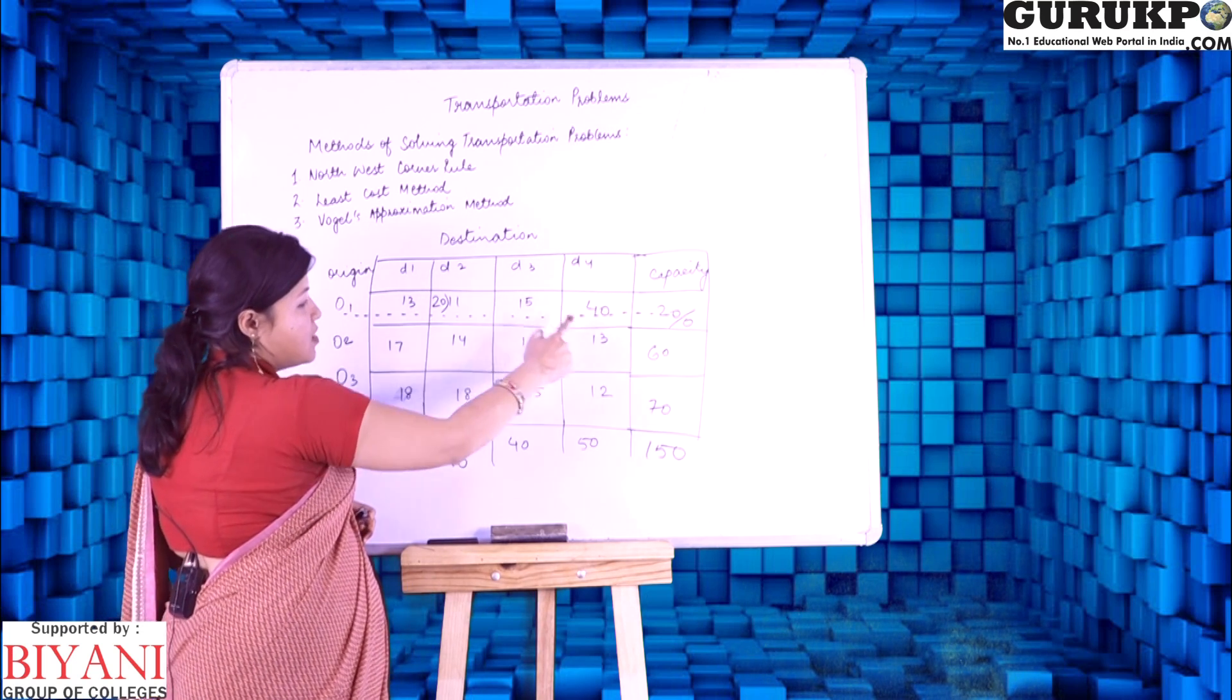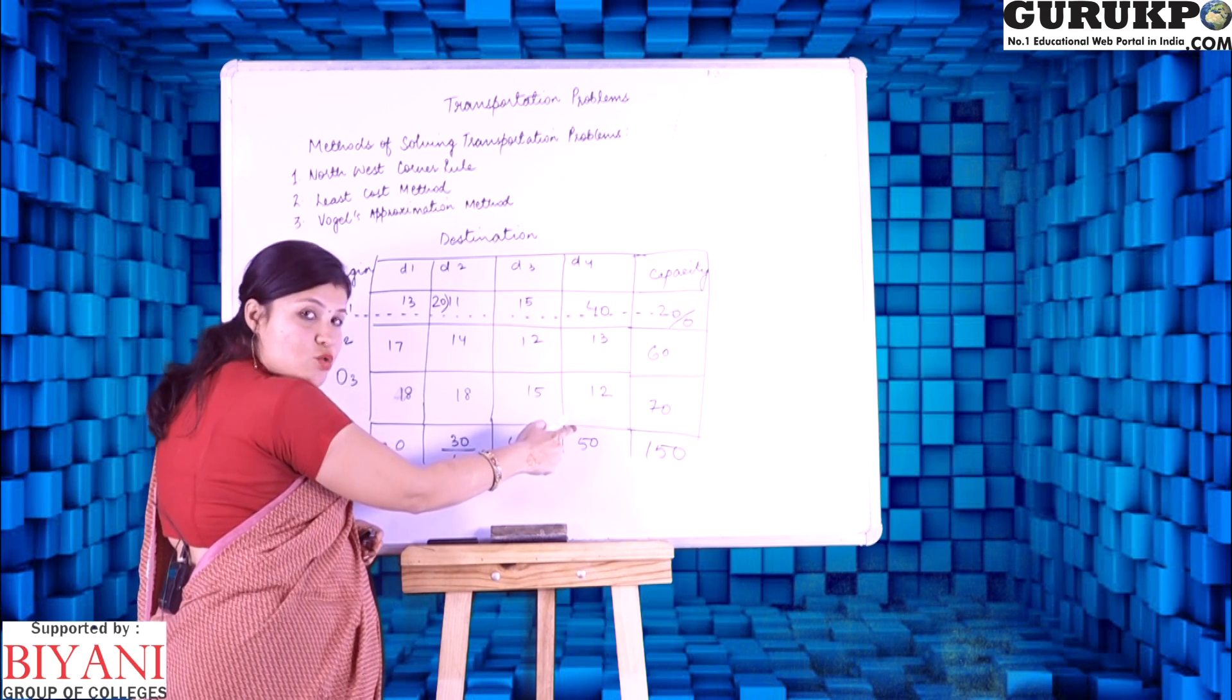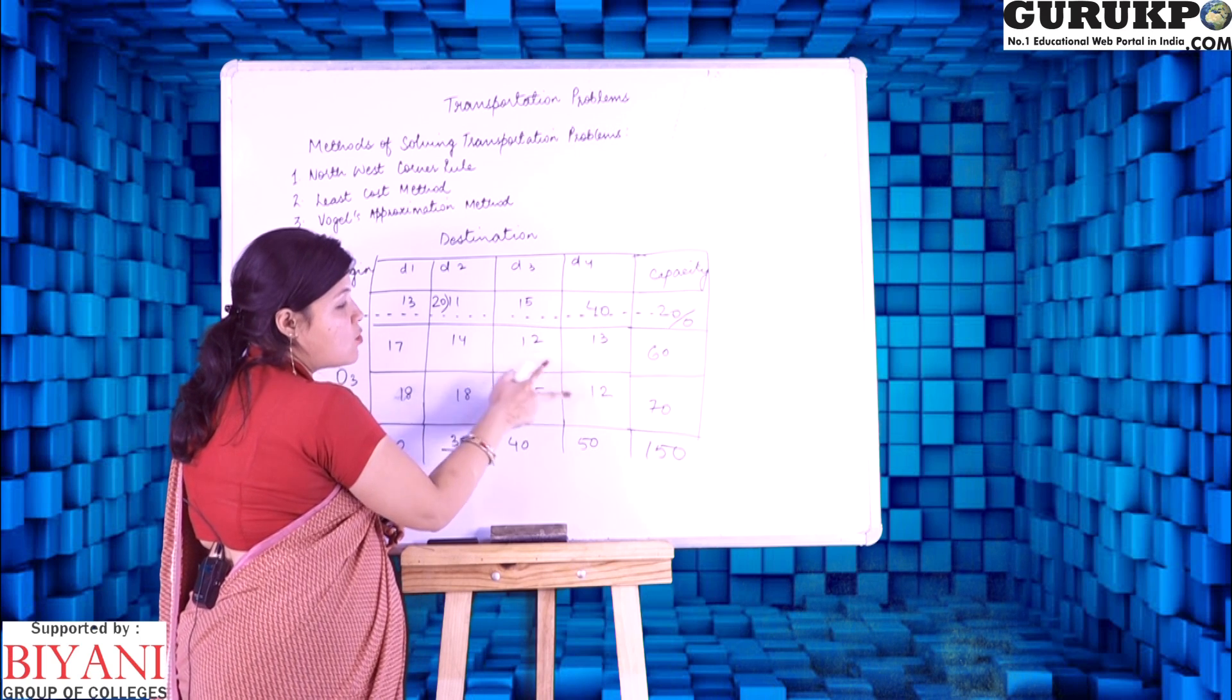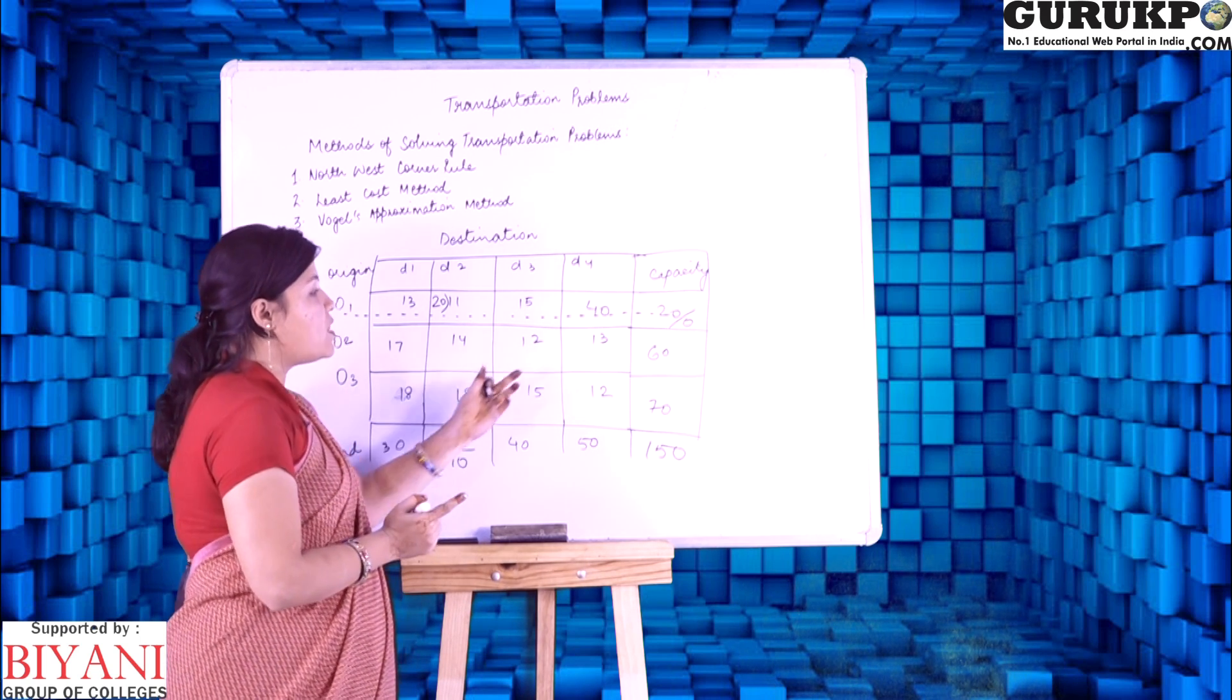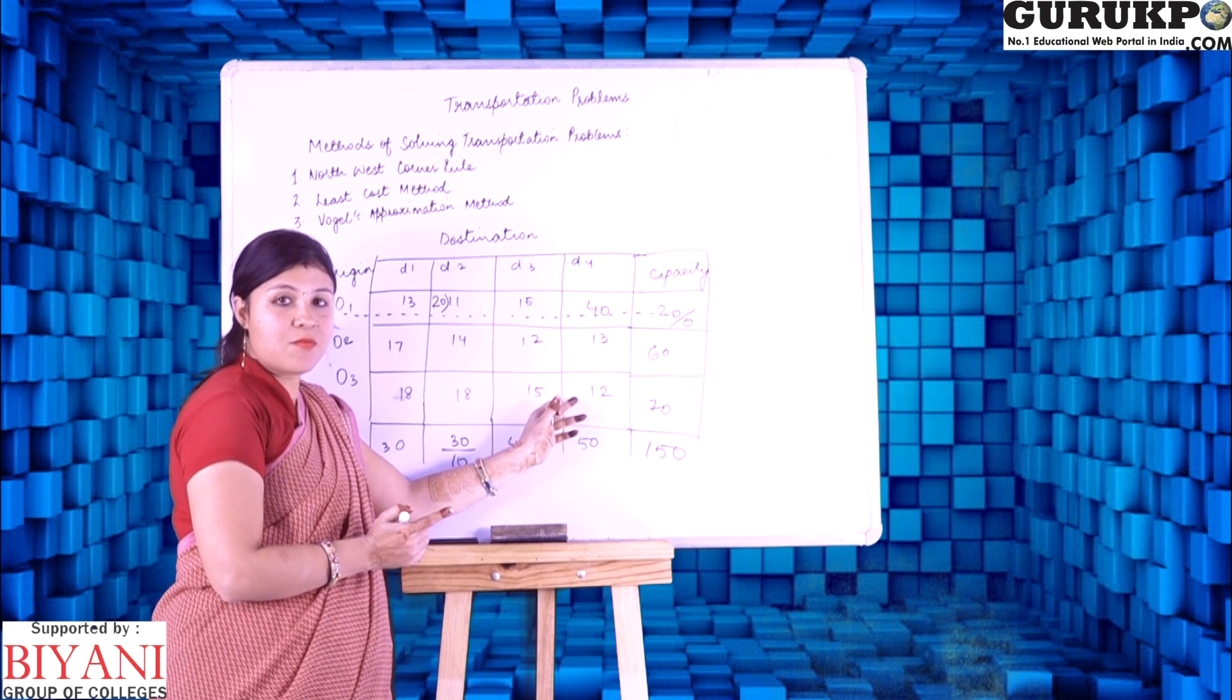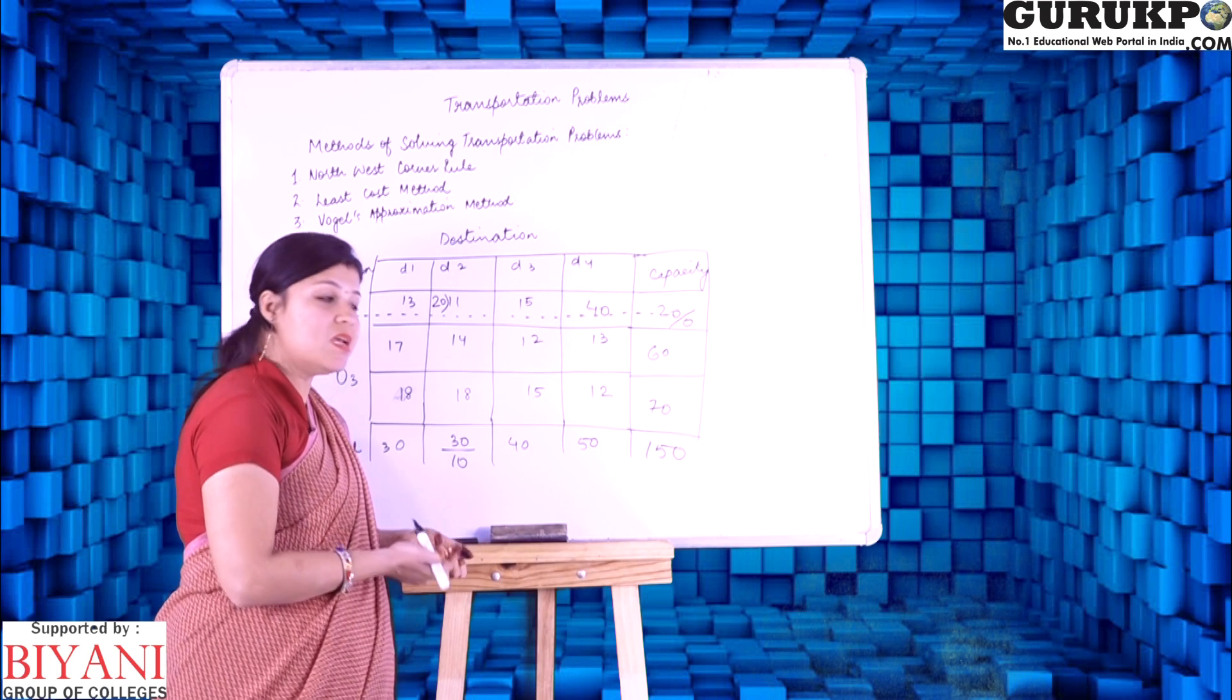Now, afterwards, now we again check the least cost, here it is 12. Now, there are two 12 costs. Now, to allocate which one is the question. So, when there are least cost same, we will allocate at that point where maximum allocation can be given.